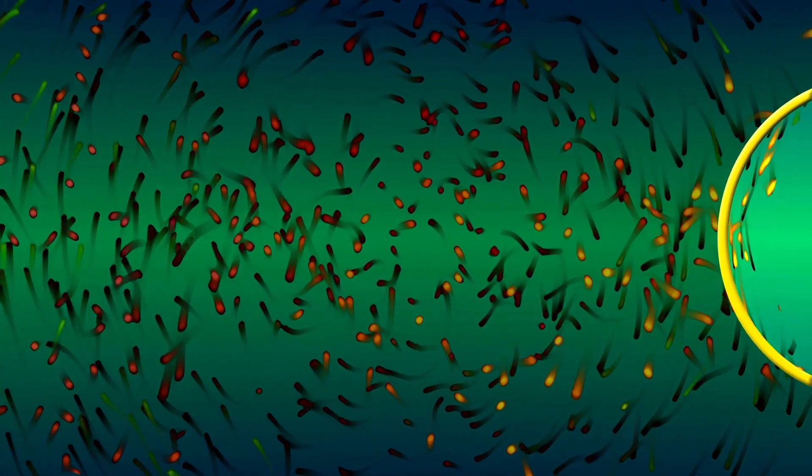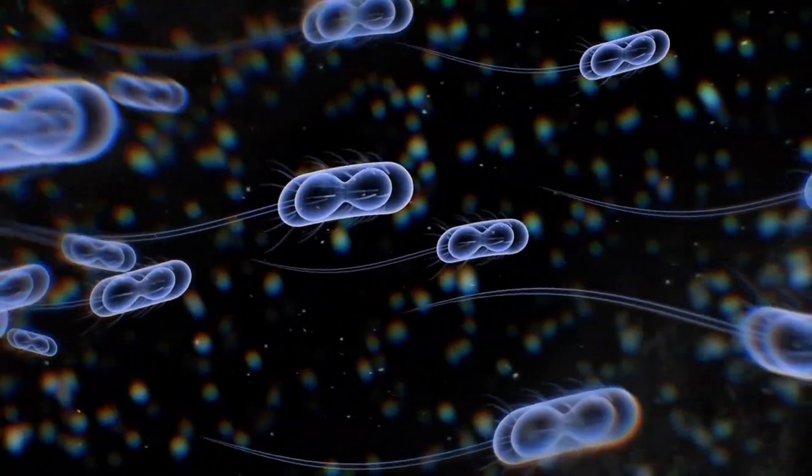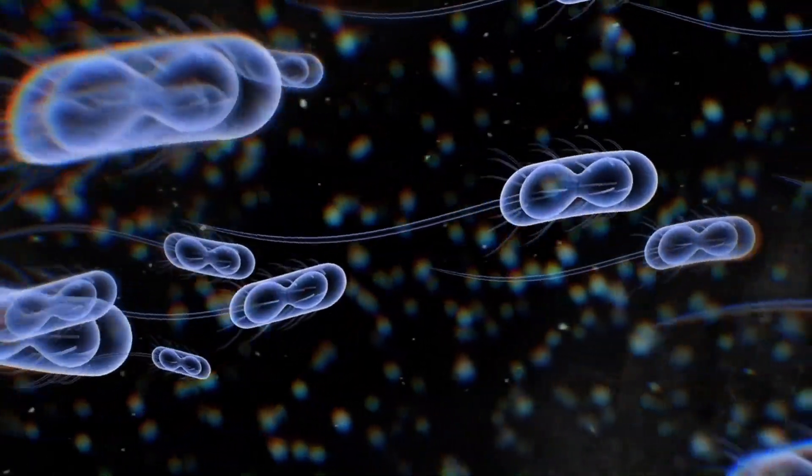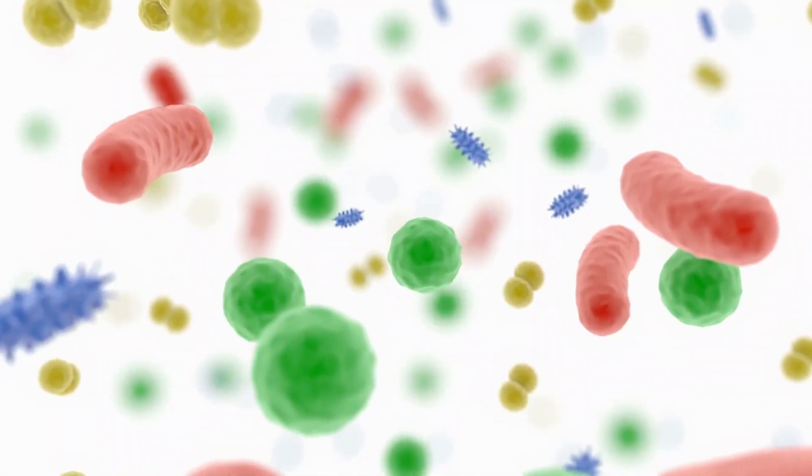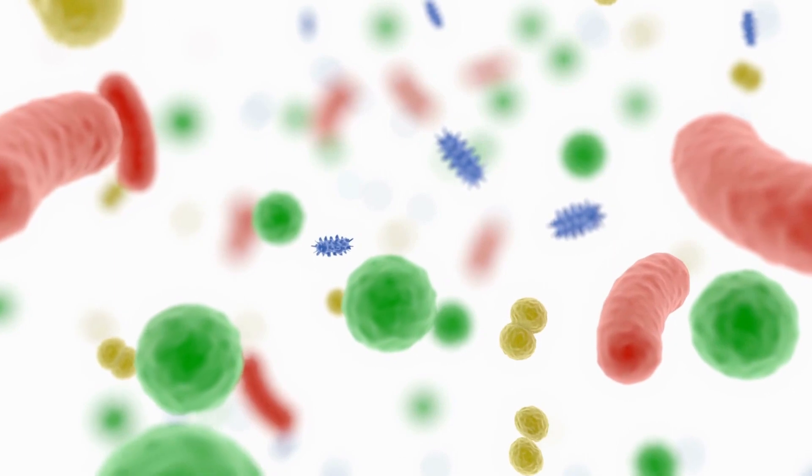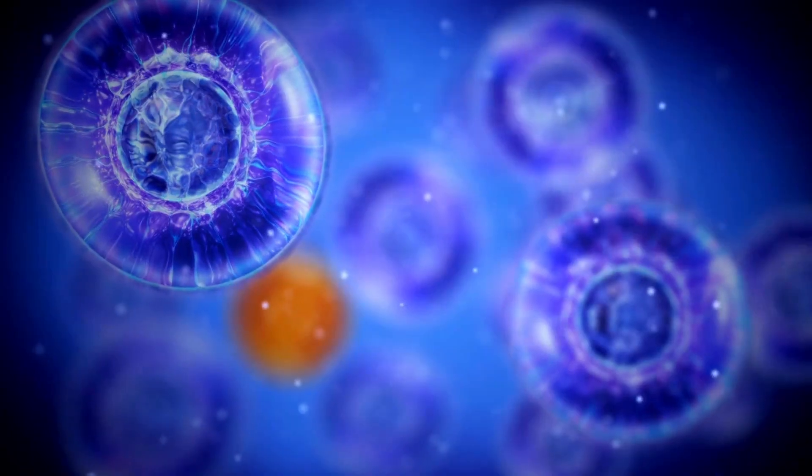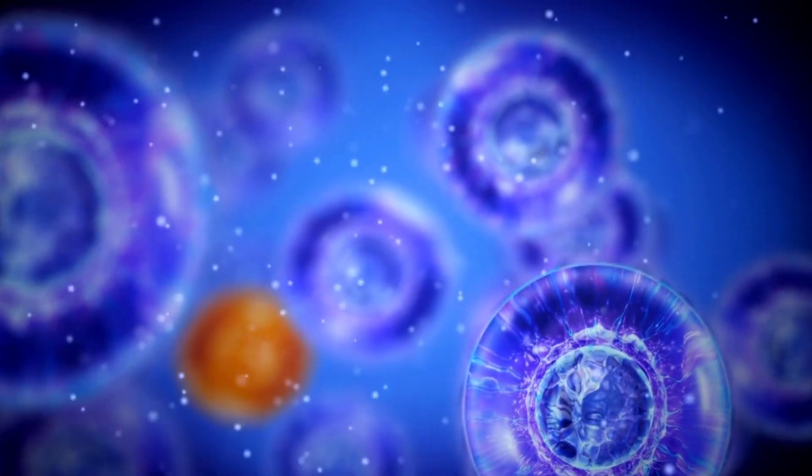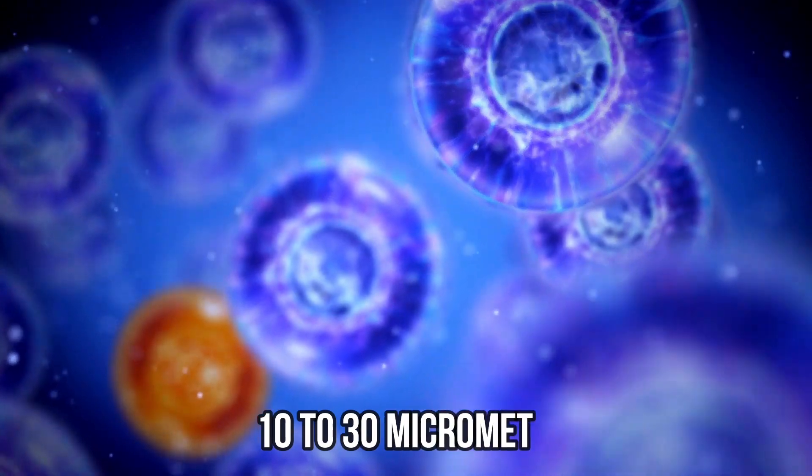In general, bacterial cells are about one-tenth the size of human cells. The size of a bacterial cell depends on the specific type of bacteria, but most are in the range of 0.2 to 2.0 micrometers in diameter. Human cells are much larger, with most being in the range of 10 to 30 micrometers in diameter.